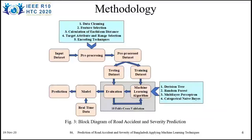This is the block diagram of our work. After taking the input data, it was pre-processed by data cleaning, feature selection, calculation of Euclidean distance as the merging method, target attribution, range selection, and encoding the data with specific techniques. After pre-processing, the data was divided into two separate parts: training and testing. The training dataset was passed through the machine learning algorithm to learn the patterns, and the testing dataset was used to evaluate the model. Then, 10-fold cross-validation was done to prepare the model to predict data accurately.